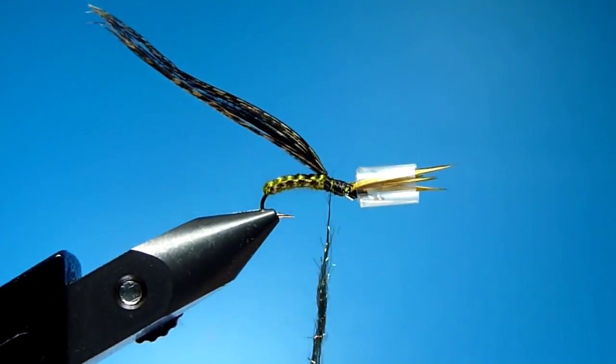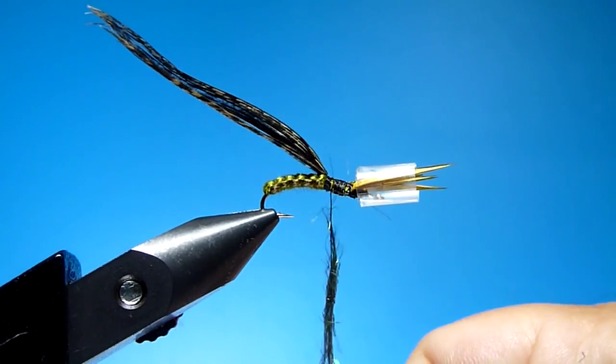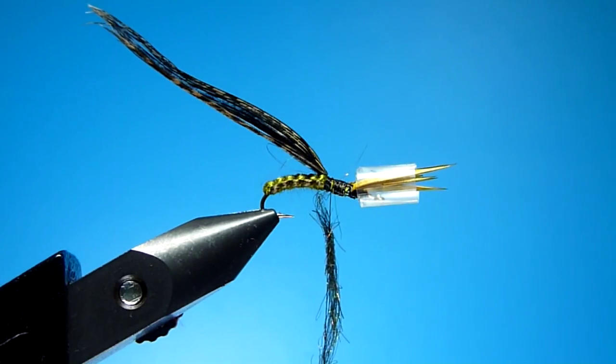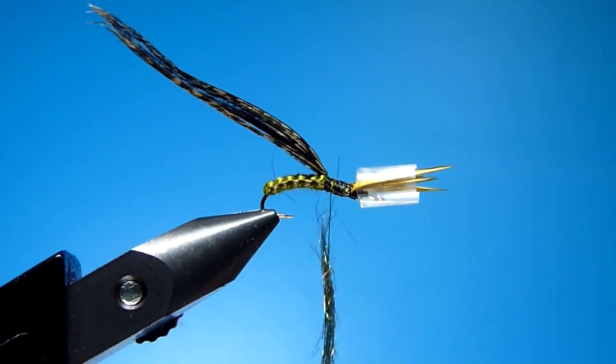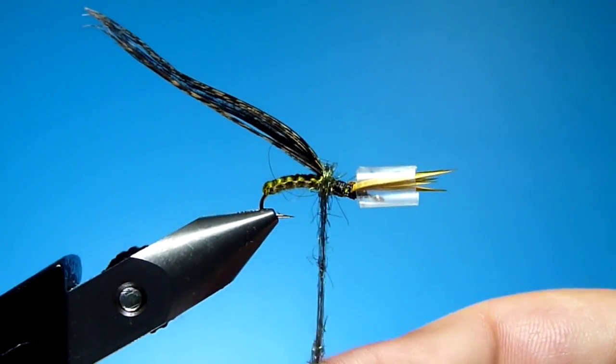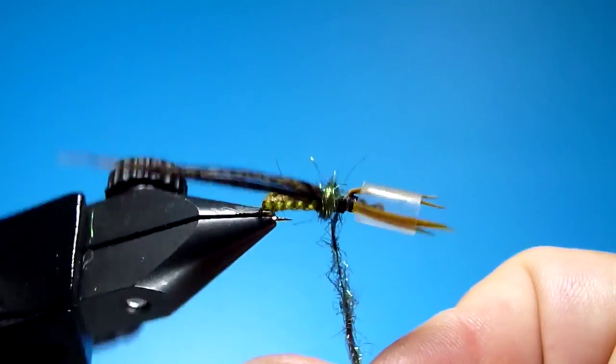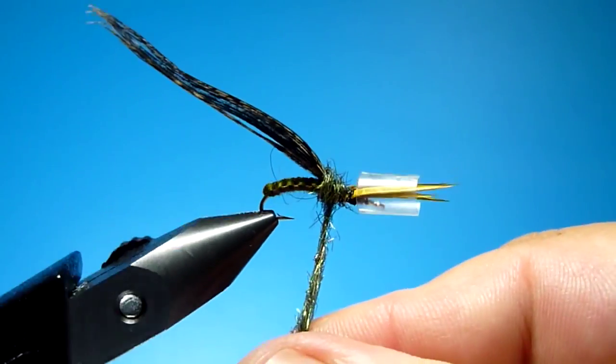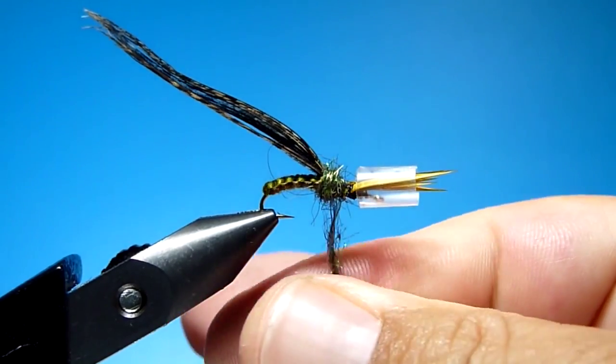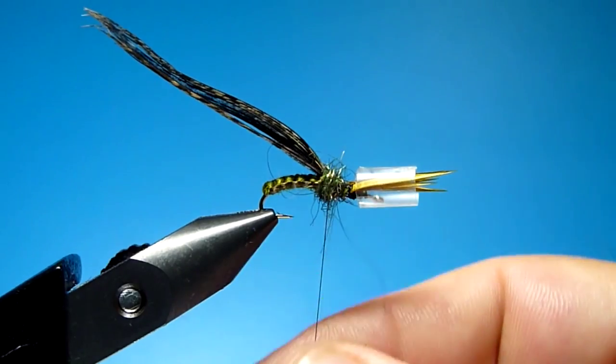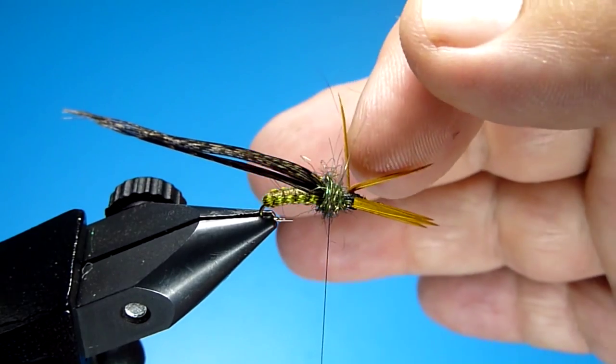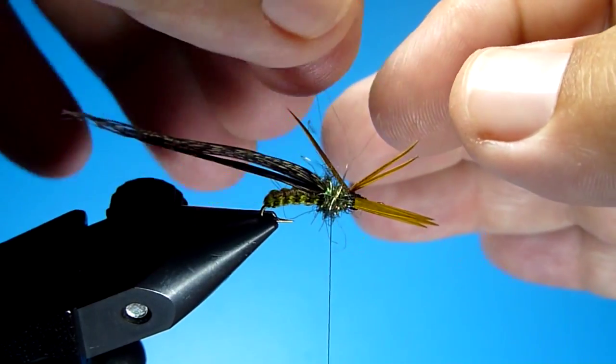You also want this ball in the back to be nice and big and that keeps your legs from just riding all the way along the body. It forces them to stick out a bit and makes it look a little buggier. So once you get a good ball going, pop off your straw.